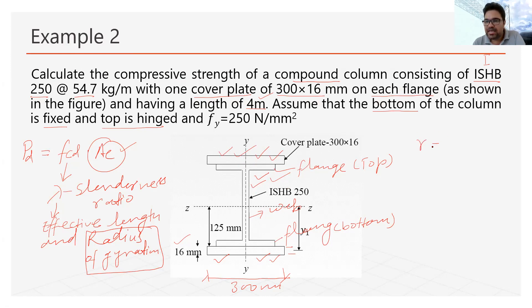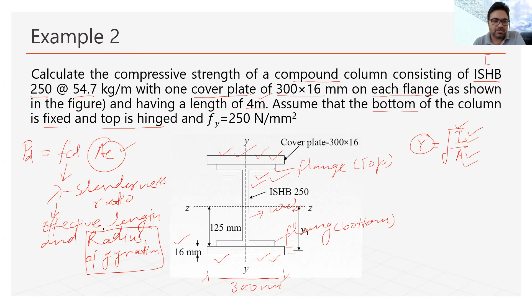The formula for radius of gyration is r = √(I/A), where I is the moment of inertia and A is the area of cross-section. To find the radius of gyration for any section, we find the moment of inertia and area for that section and calculate r. Once we find the radius of gyration, we use it to calculate the slenderness ratio lambda, which is used to find FCD.